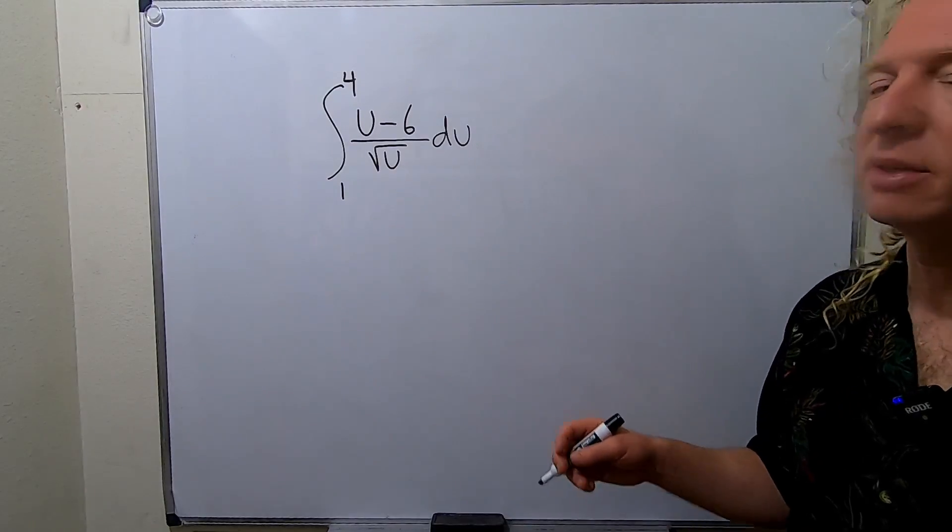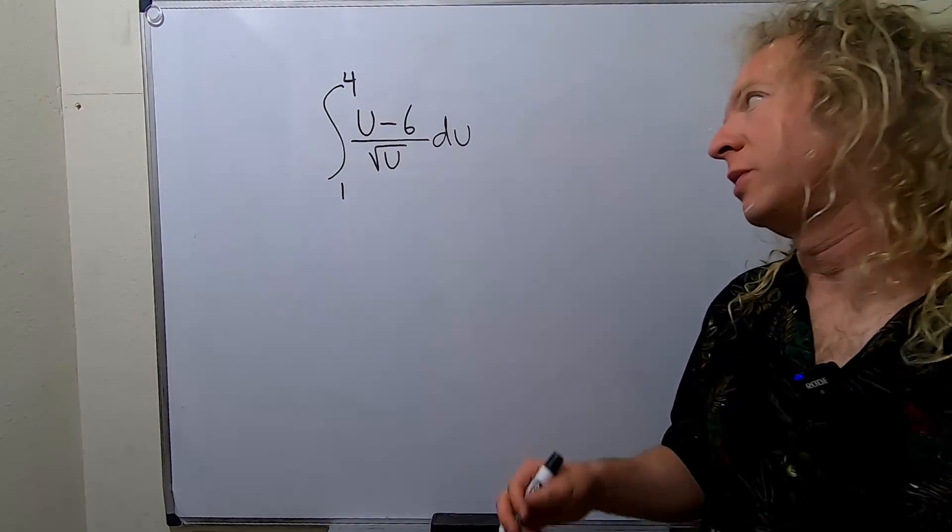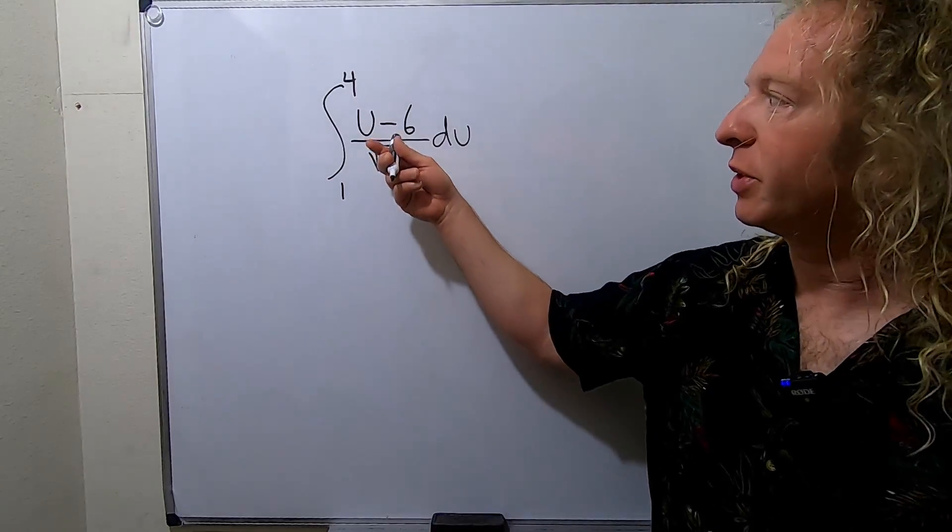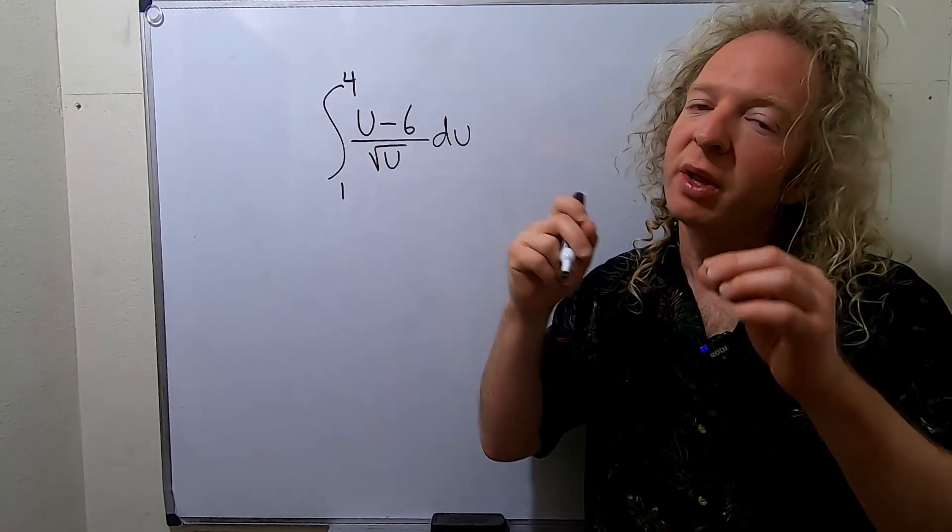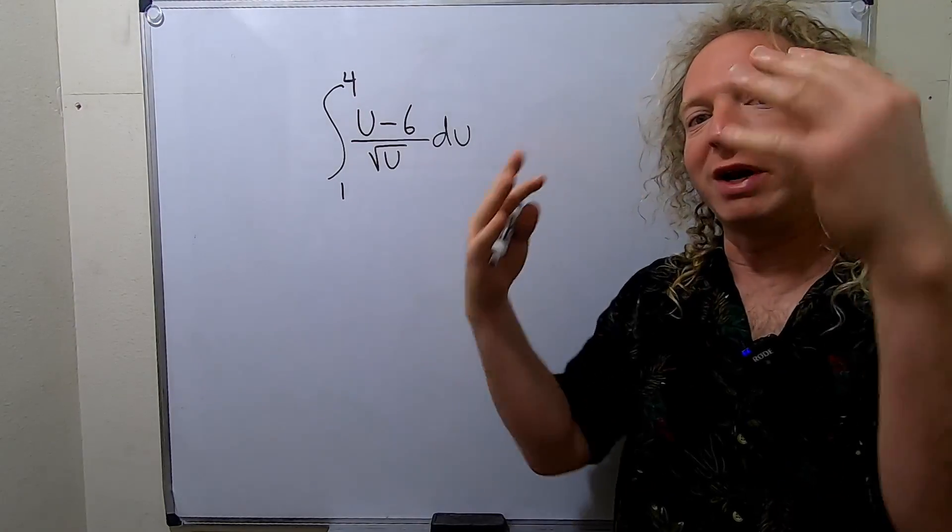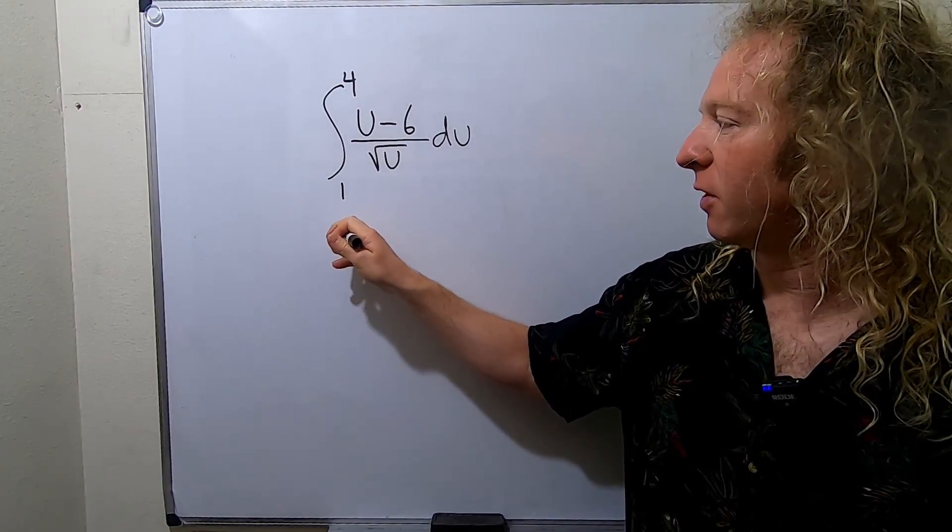In this video we're going to evaluate this definite integral. Before we do that, we want to write everything as u to a power. You'll notice we have two terms up top and one term on the bottom. So whenever you have that, you want to break it up. We're going to break it up as follows.